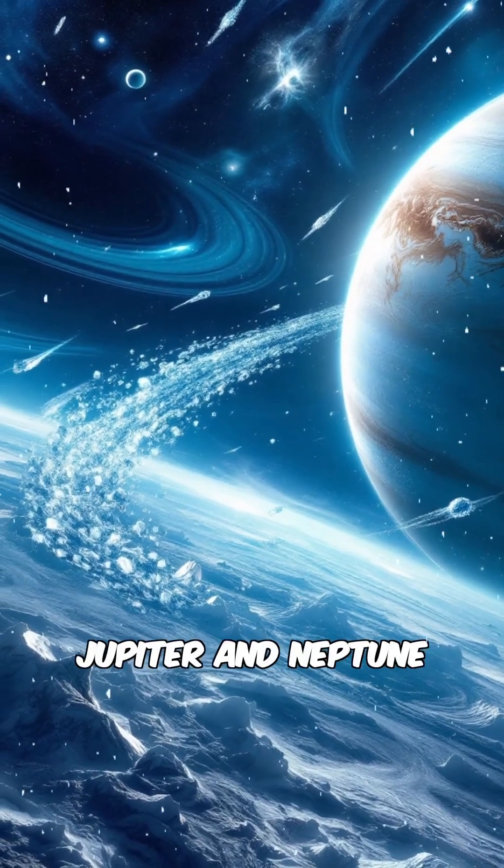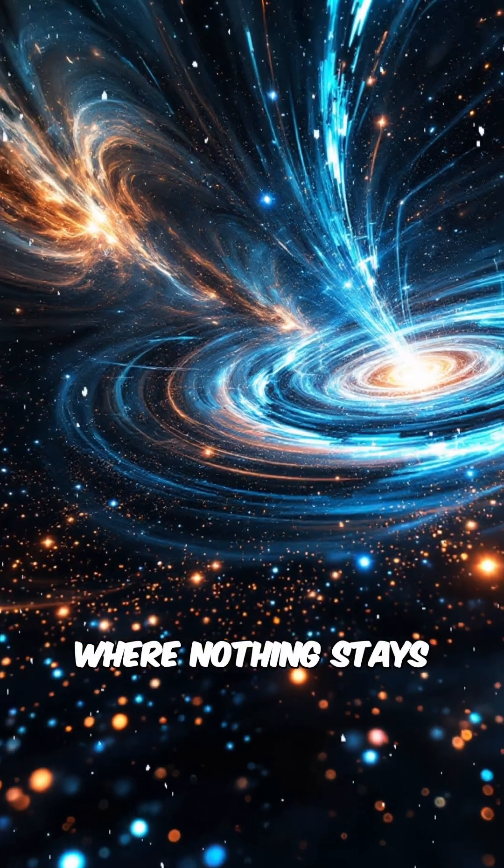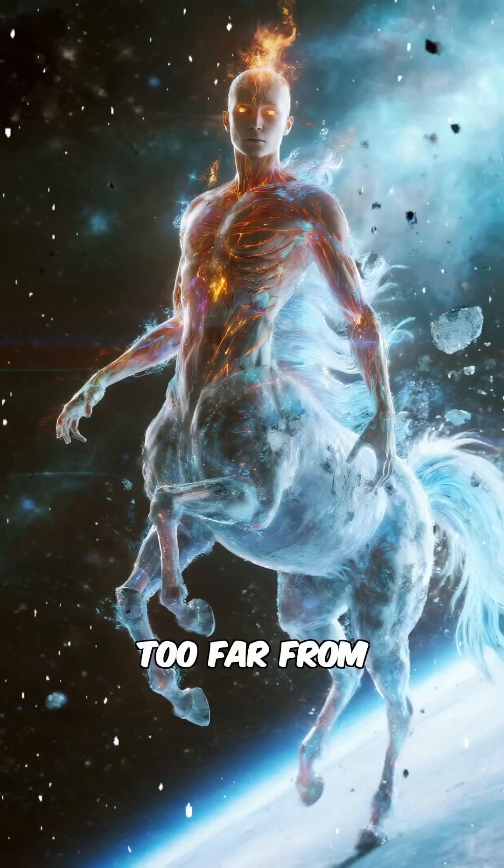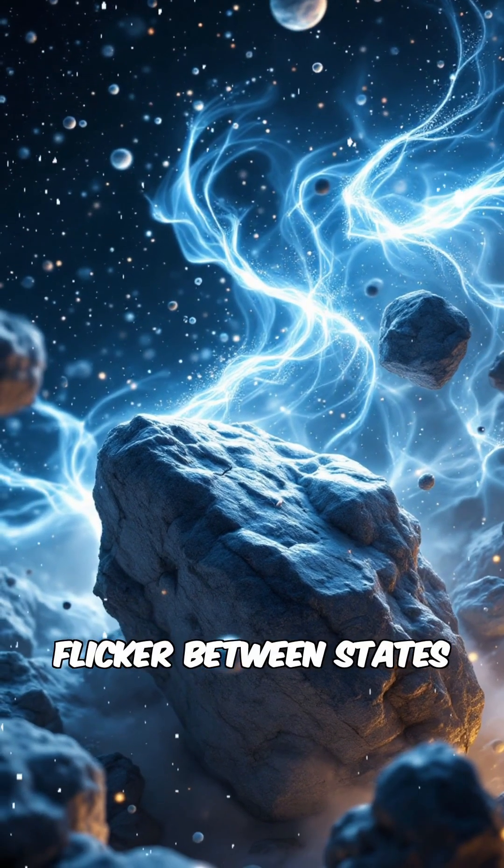They live between Jupiter and Neptune in a chaotic stretch of space where nothing stays still for long. Too far from the sun to melt, too close to stay frozen, so they just flicker between states.